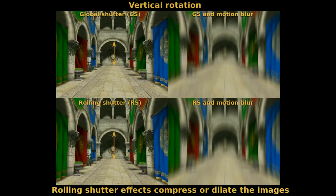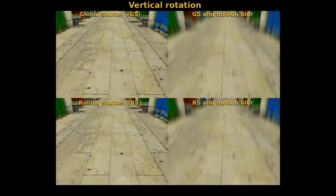This simulation considers vertical rotation. In this case the image is either stretched with an upward movement or compressed with a down movement.